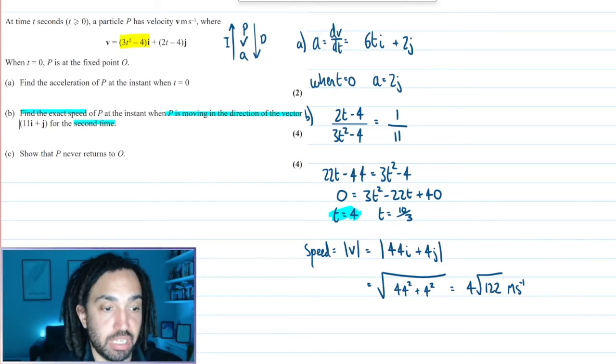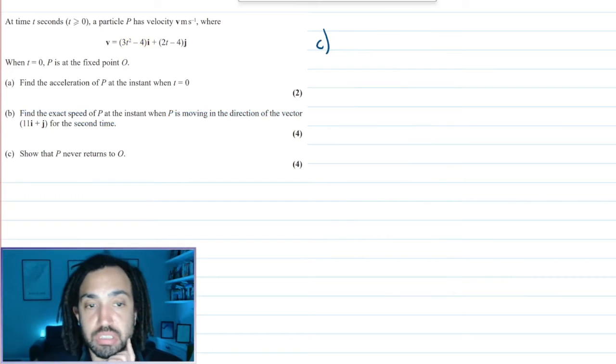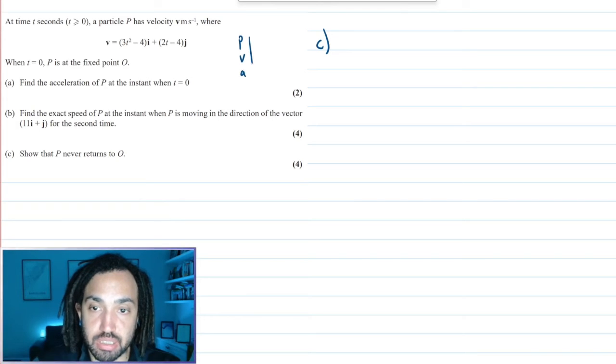Fantastic. Let me grab some more space and we'll go on to part c. Part c says show that p never returns to the origin. I just deleted this which I shouldn't have done because we're going to need to use it.